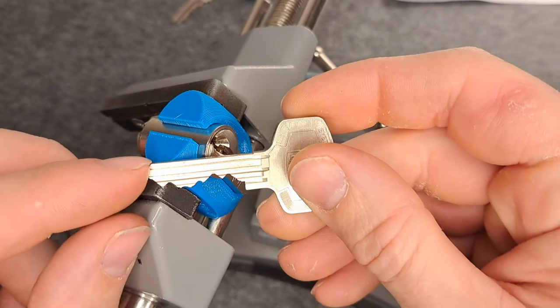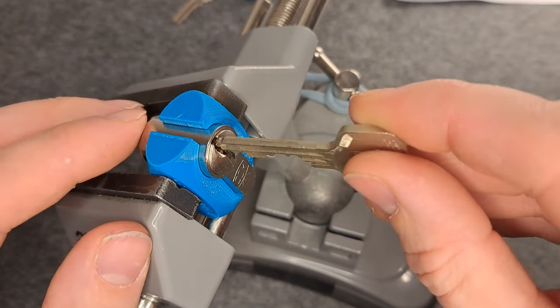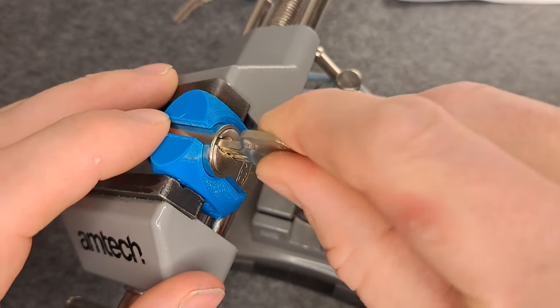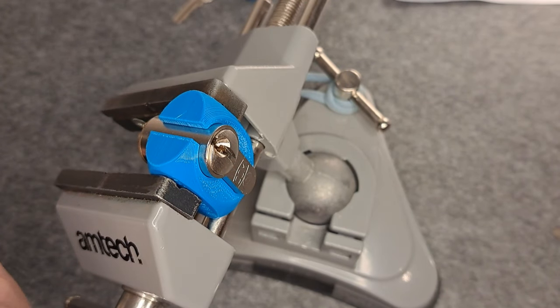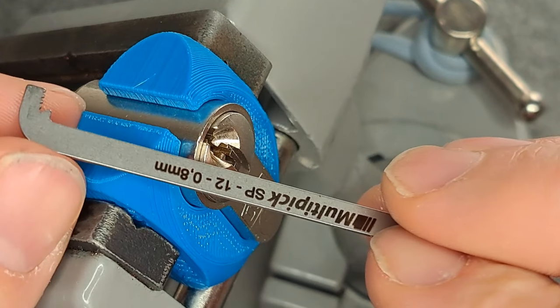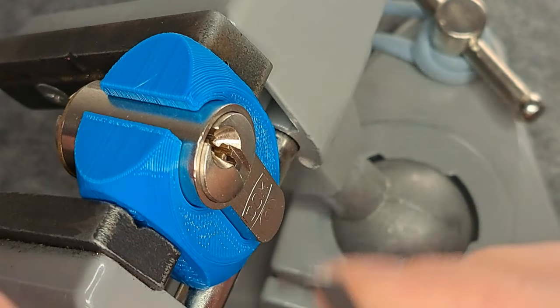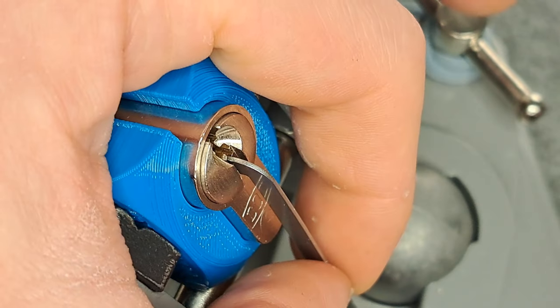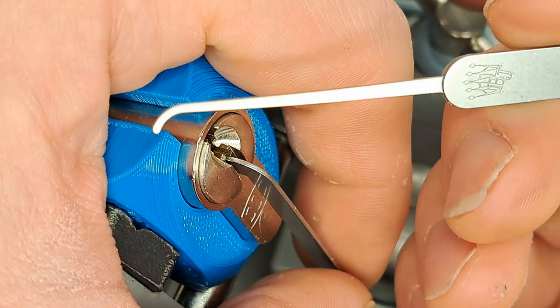Welcome back, lock in vice, here's the key. Let's pick it. I'm using a flat pry bar in 0.8 millimeters, tensioning clockwise, and then using a steep hook in 0.6 millimeters, the PN05 from Multipick.